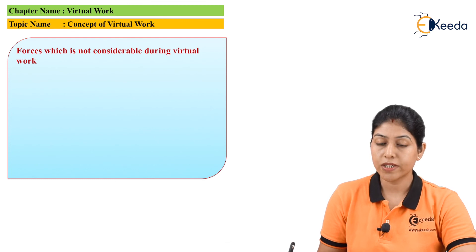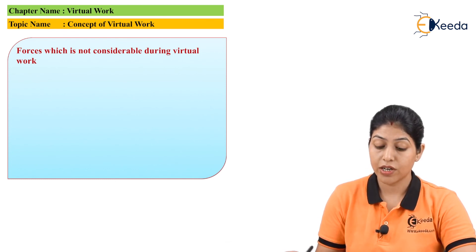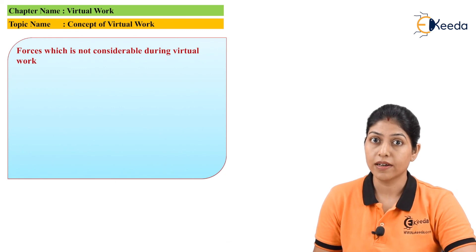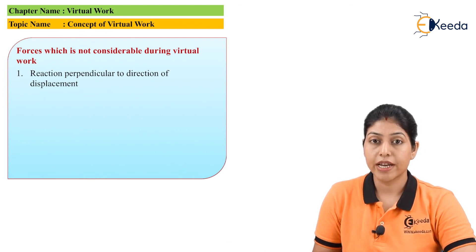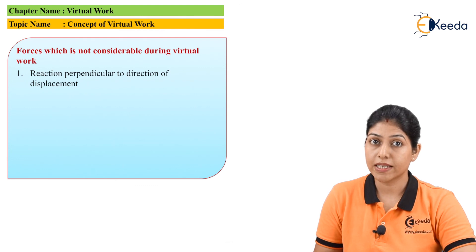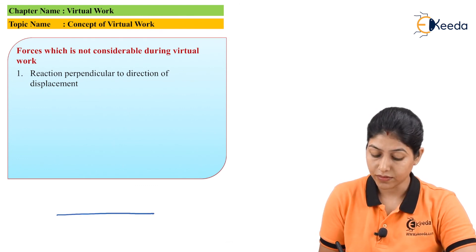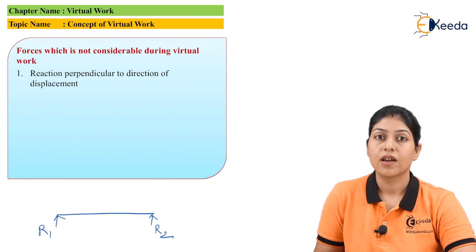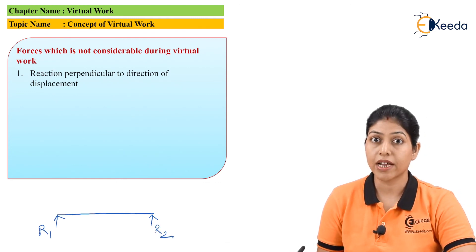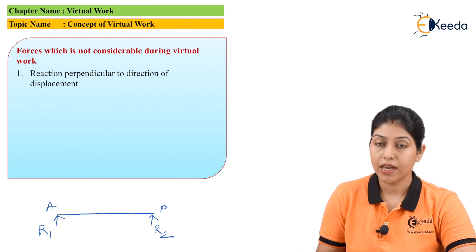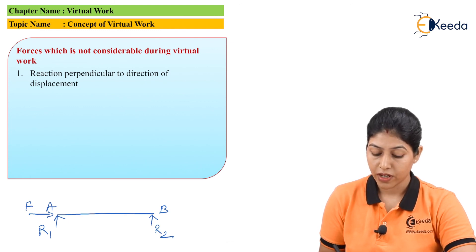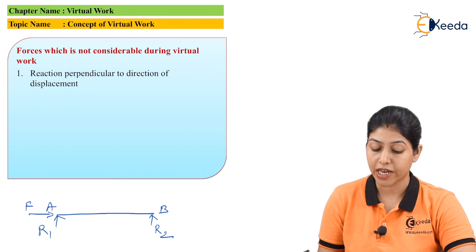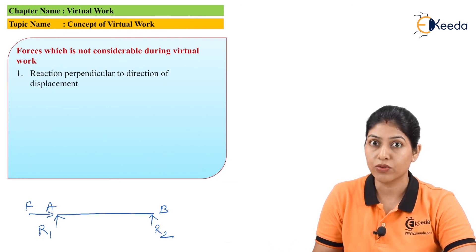Now let's discuss the forces which are not at all considerable during virtual work. The first force is the reaction perpendicular to the direction of displacement. If we are considering any rod or bar, R1 and R2 representing the reactions at the ends — if we apply a horizontal force F on the bar, the reactions R1 and R2 are perpendicular to force F, so they are not considerable during the virtual work.